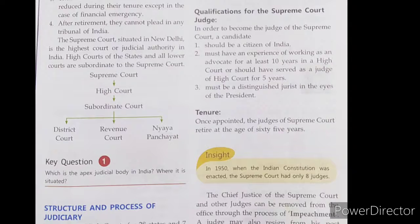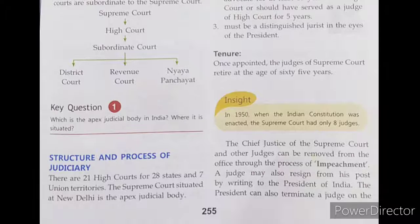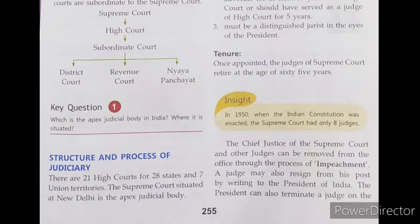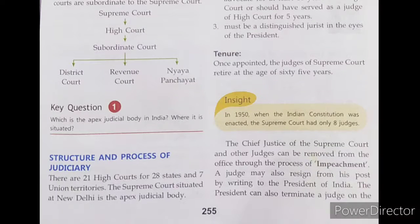Once a person is appointed as a judge of the Supreme Court, he or she can remain in office till the age of 65 years. The removal of a judge of the Supreme Court is not an easy task. A judge may resign from office by writing to the President. A judge may also be removed by the President on the grounds of proved misbehavior or incapacity.